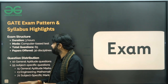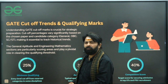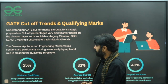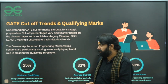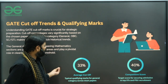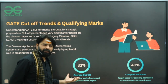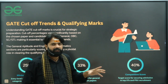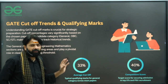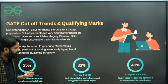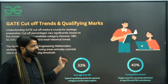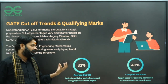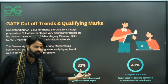Looking at GATE cutoffs based on previous year observations, the minimum qualifying mark is around 25 percent. On average, 33 percent is required for the general category to qualify, while other categories differ. If you score around 40 out of 100, you are in competition for good colleges like IITs, NITs, or Triple IITs. Try to get more than 25 percent to qualify, aim for 30-33 to ensure qualification, and 40 or above gives you good opportunities at prestigious institutes or even a PSU job.